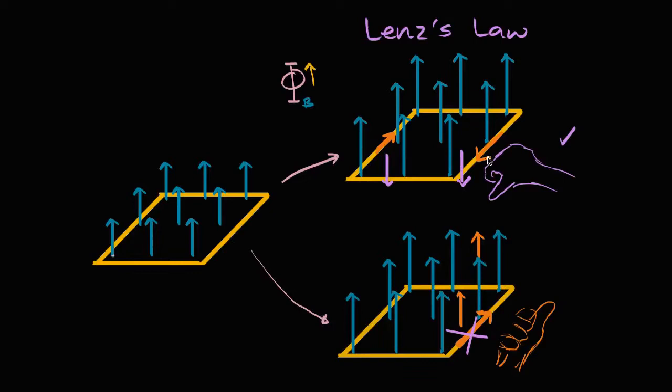...to think about which way the current would flow, you just have to ask: what type of magnetic field would each direction of current produce? That magnetic field should go in a direction that goes against your change in flux. If the flux is increasing, the magnetic field induced by the induced current should make the flux decrease. If the flux was decreasing, the induced magnetic field should be additive to the flux.